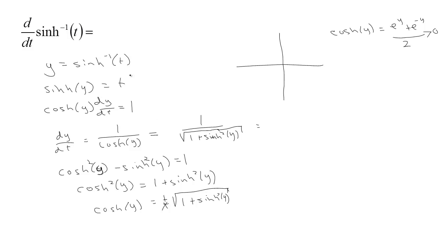And we know that the sinh of y is t, so the sinh squared would be t squared. We get 1 over the square root of 1 plus t squared.